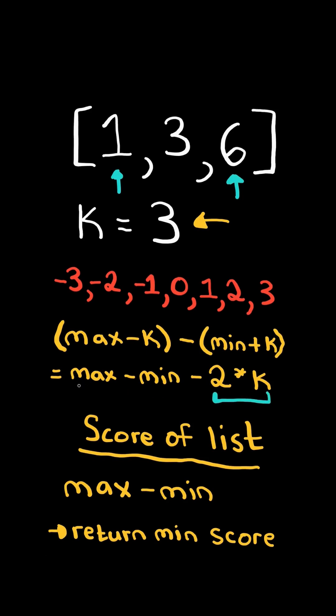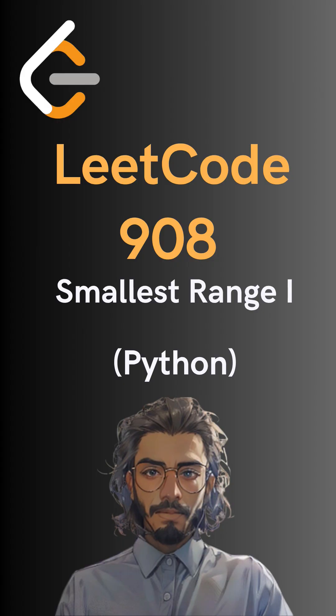There could be a chance that 2k is bigger than the original range, and so if this result is negative, we return zero. And here's the code to do like and follow for more.